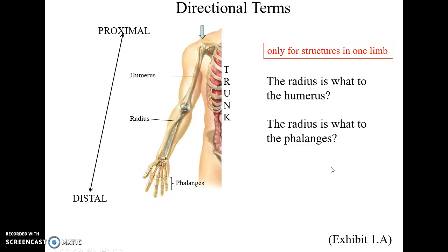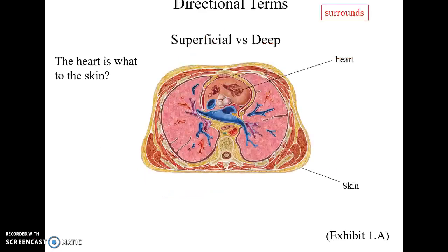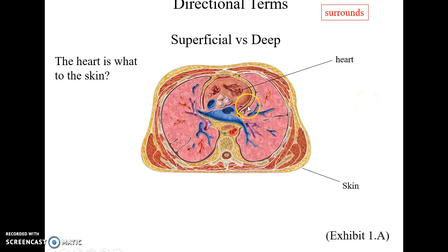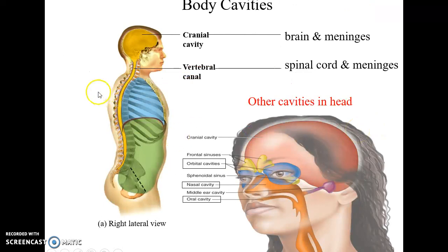Superficial and deep are used when talking about layers of a structure or things surrounding other structures. For example, the heart is deep to the skin because it is further away from the surface, while the skin is superficial to the heart because it is closer to the surface.